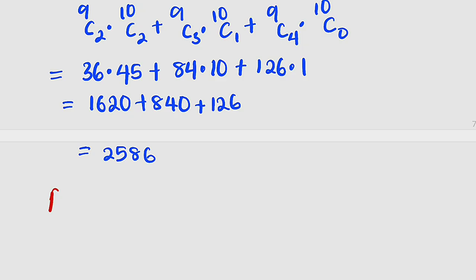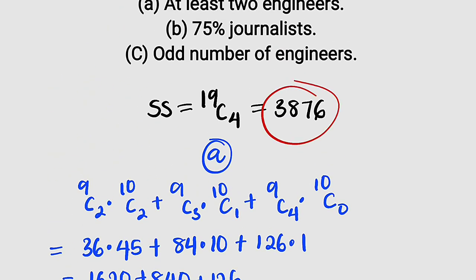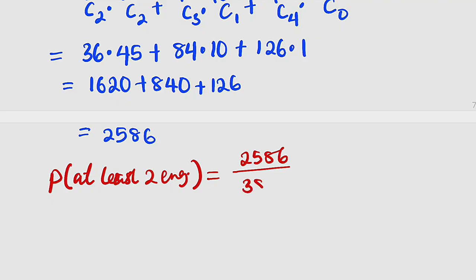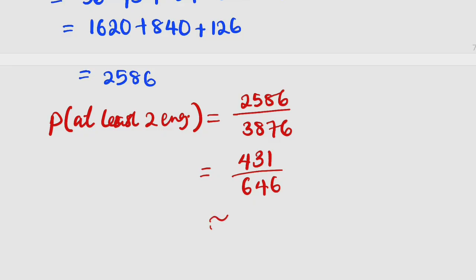Therefore, the probability that at least two engineers are selected is equal to the expected outcomes, which is 2,586, divided by the sample space, which is 3,876. In simplest form this is 431/646, or in decimal, approximately 0.667. So this is the probability.